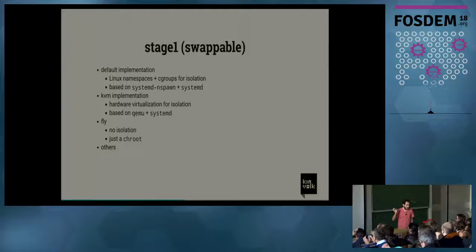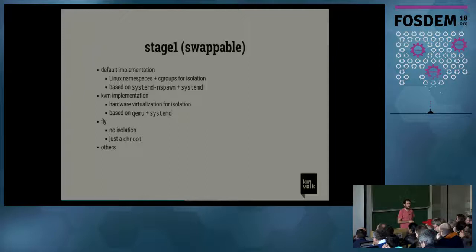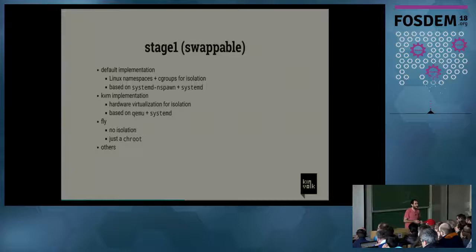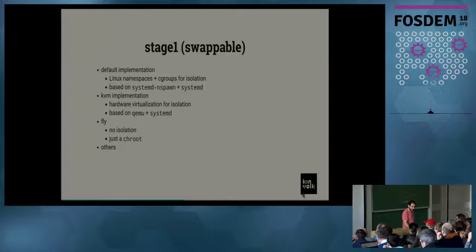There are also different stage 1 implementations. There's a KVM implementation that uses hardware virtualization instead of Linux containers, currently based on QEMU and systemd, giving you a full VM where you can run applications. And there's a 'fly' implementation which has no application isolation — it's just a chroot — and it's there to take advantage of Rocket's image distribution mechanism when you want to run an application without isolation.